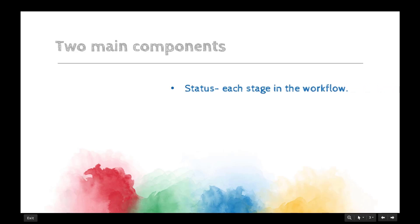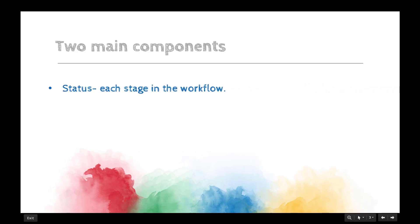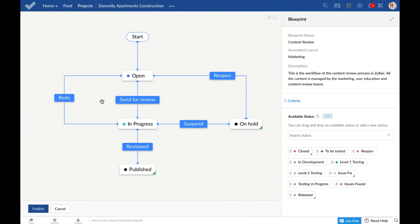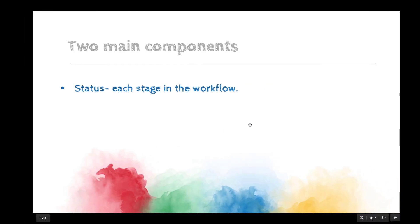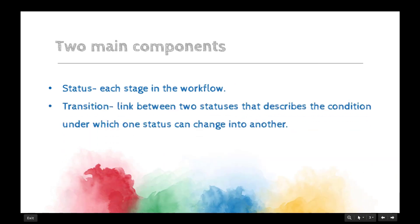Understanding these terms is crucial to designing and executing blueprints successfully. Each stage in a workflow is known as a status. So in this example, open, in progress, published, and on hold are some of the statuses of the review process.